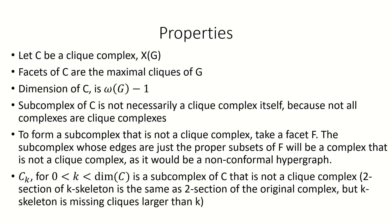There's a whole class of subcomplexes that will not be clique complexes: these are the k-skeletons of the clique complex, for k less than the dimension of the clique complex and greater than zero. This is because the two-section of the k-skeleton will be the same as the two-section of the entire complex, but for k less than the dimension of the complex, we'll be missing some of the faces of dimension larger than k, meaning there will be some maximal clique in the two-section that's not a face of the k-skeleton.